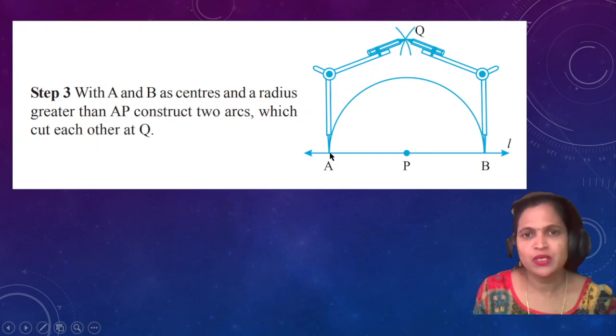Keeping one needle point on A, draw this arc, and again with the same length draw another arc from point B. You will get an intersection point.